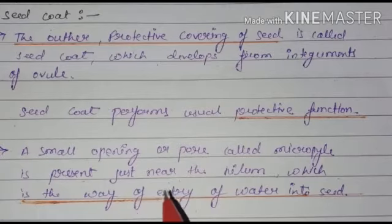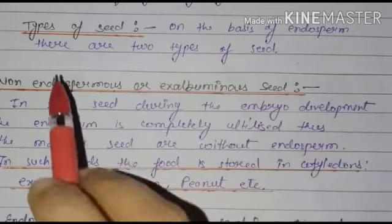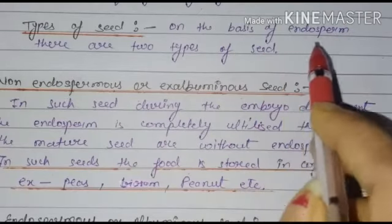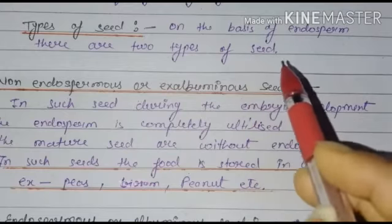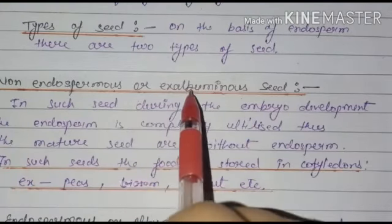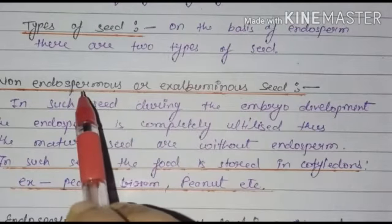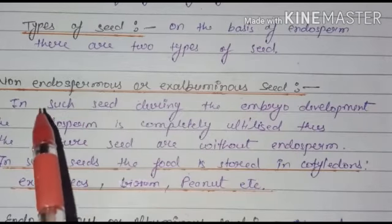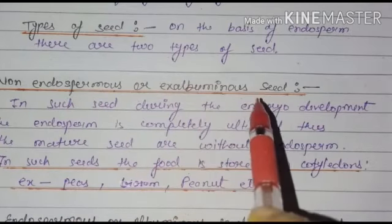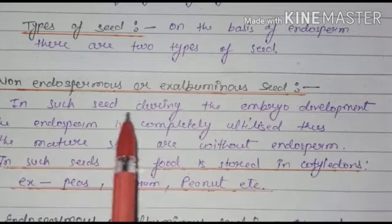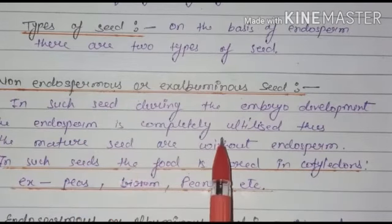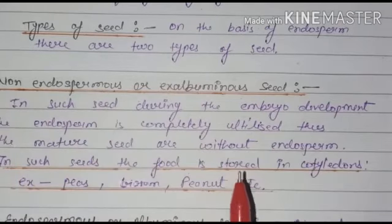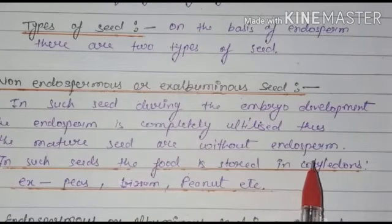Now, types of seeds. On the basis of endosperm — whether endosperm is present or absent — seeds are of two types. The first type is non-endospermous or exalbuminous seeds. The name tells us that these are seeds in which endosperm is absent. In such seeds, during embryo development, the endosperm is completely utilized, and thus the mature seeds are without endosperm.